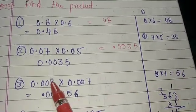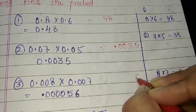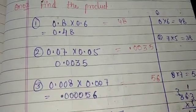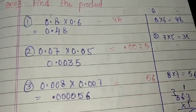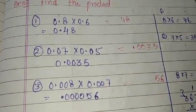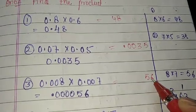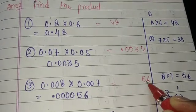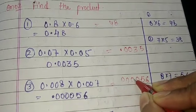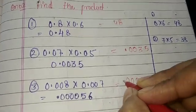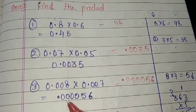Next: 0.008 times 0.07. Take digits: 8 times 7 is 56. Count total decimal places: 3 in 0.008 and 2 in 0.07 — total 5 decimal places. But we only have 2 digits in 56, so we need 4 leading zeros. Place point after 6 digits total. My answer is 0.00056.